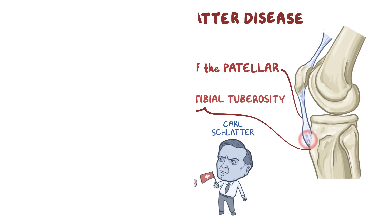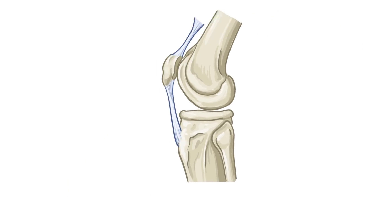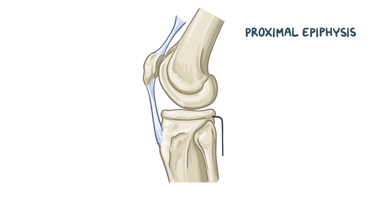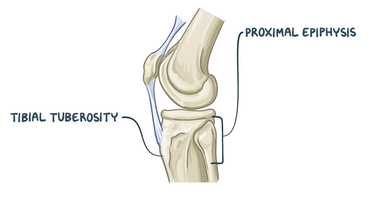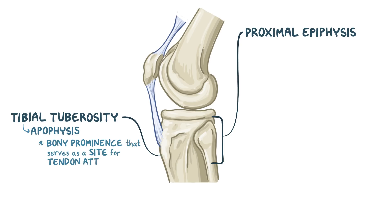Focusing in on the knee, the proximal epiphysis of the tibia — which is the upper end of the tibia that contributes to the knee joint — has a bony prominence called the tibial tuberosity. This is considered an apophysis, meaning that it's a bony prominence that serves as a site for tendon attachment.